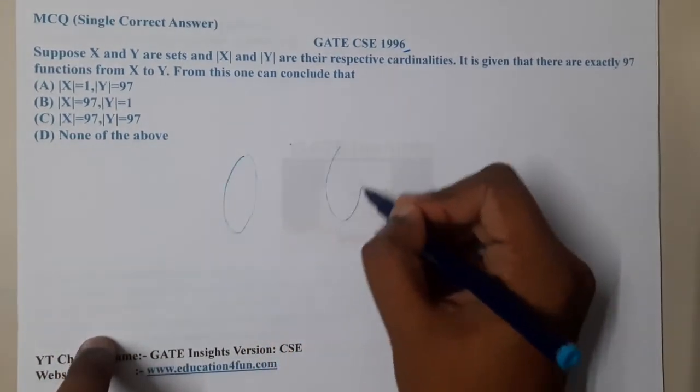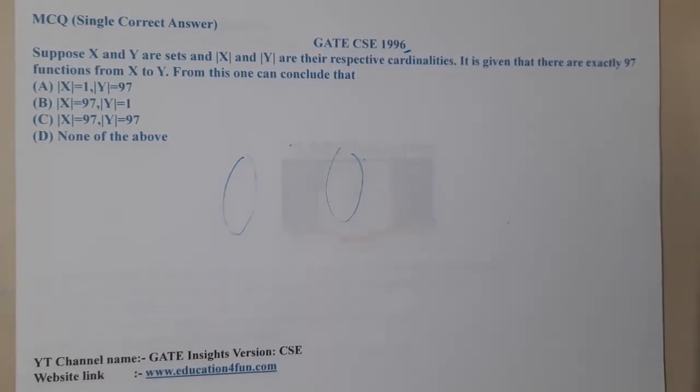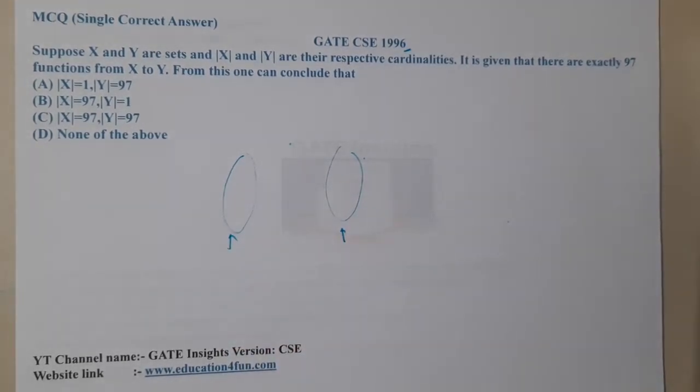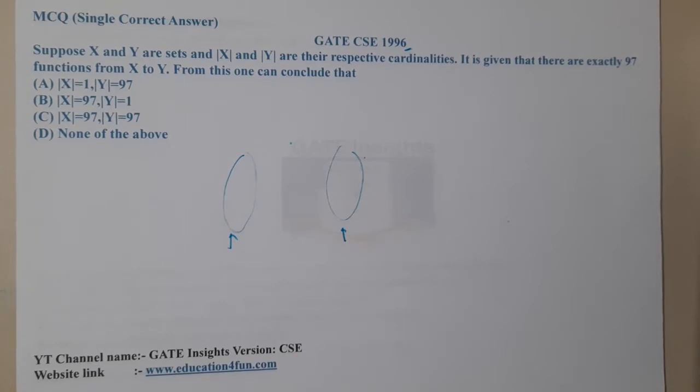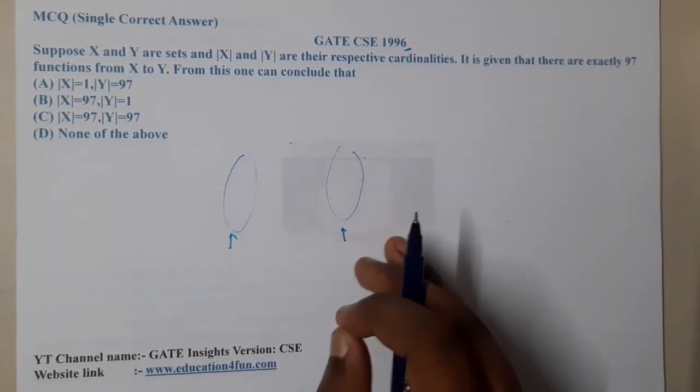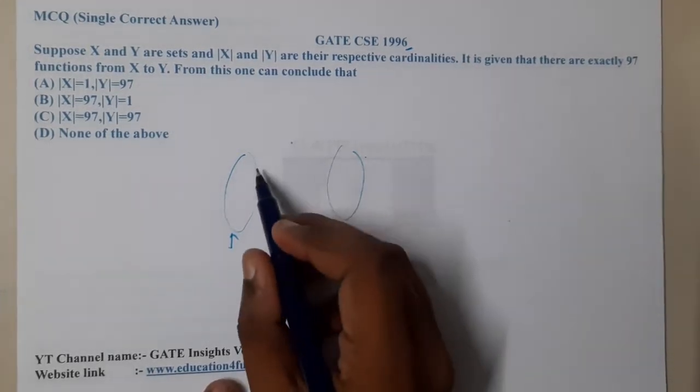X is a set and Y is a set, and their cardinalities are mod X and mod Y. Cardinality is nothing but the count of elements in X and count of elements in Y. It is given that there are exactly 97 functions from X to Y.